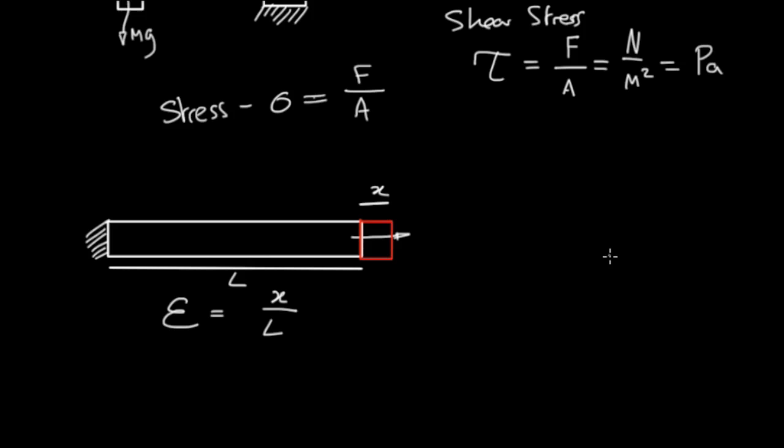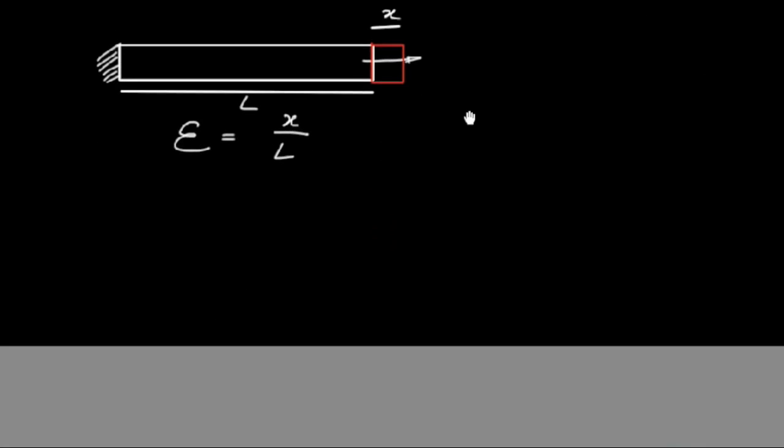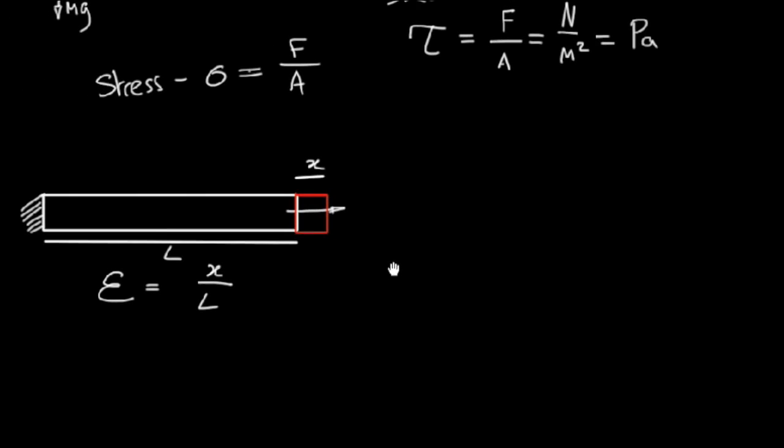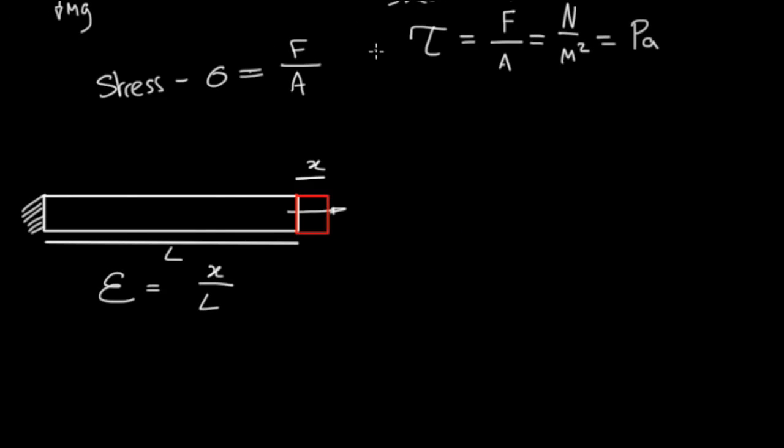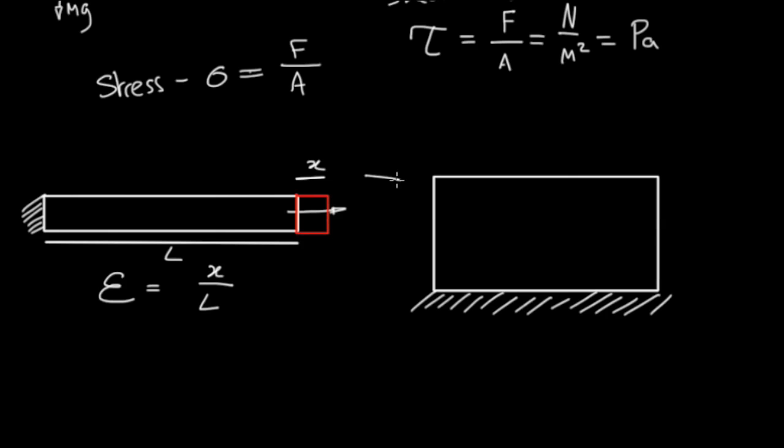And then finally you have something that's known as the shear strain. So let's say we have some metal or plastic box over here, and it can't move, it's attached to the ground, glued down. And you apply a force parallel to this top plane.